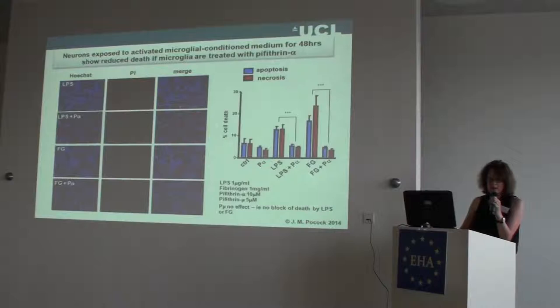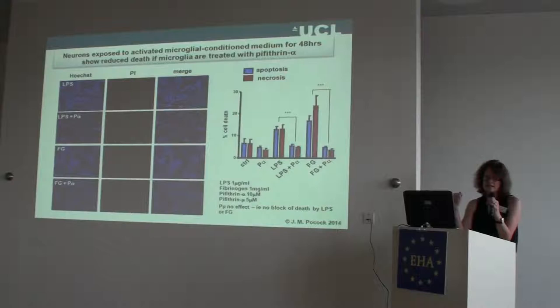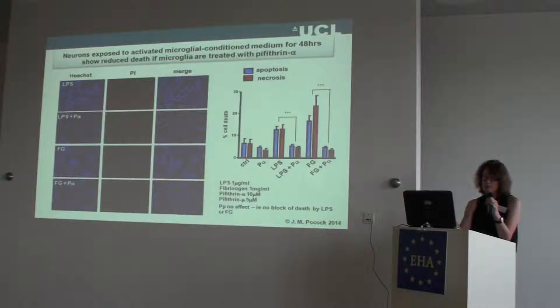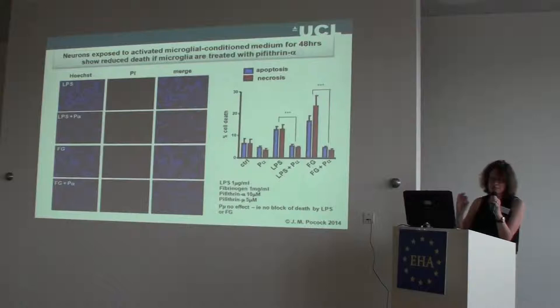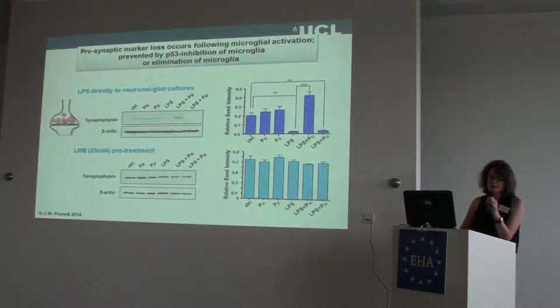This shows that we're getting neuronal damage with activated microglia, and if we block with pifithrin-alpha, we don't. We used another P53 blocker, pifithrin-mu, to work out the difference between nuclear translocation of P53 and activation of P53 into the mitochondria. Pifithrin-mu is supposed to block P53 translocation and activation of mitochondrial-mediated apoptotic pathways. Pifithrin-mu did not have any effect on the toxic cascades, the inflammatory cascades, or the microglial death mediated by transcriptional activation of P53, and it didn't block neuronal death. So it's P53 in the nucleus that is mediating damage.